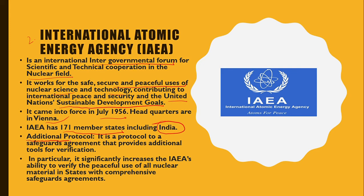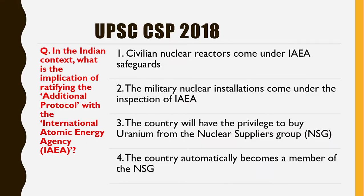There is one term called 'additional protocol,' sometimes seen in the news. What is this additional protocol? It is a protocol — a safeguards agreement — that provides additional tools for verification purposes. It significantly increases the IAEA's ability to verify the peaceful use of all nuclear material in states with comprehensive safeguards agreements.